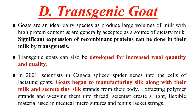Next are transgenic goats, which are ideal dairy species because they produce large volumes of milk, allowing many proteins to be produced in their milk. These transgenic goats can also be developed for increased wool quality and quantity. In 2001, scientists in Canada transferred spider genes into the cells of lactating goats. These goats started manufacturing silk along with their milk, secreting tiny silk strands that were woven into threads and made into a light, flexible material used in microsutures and tennis racket strings.